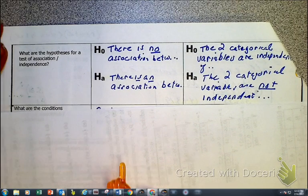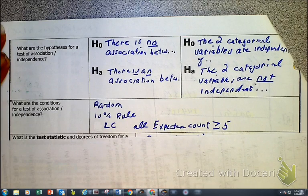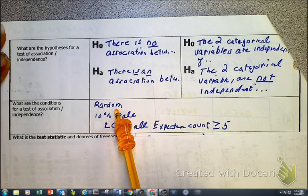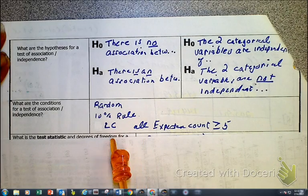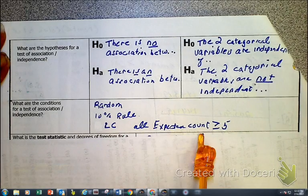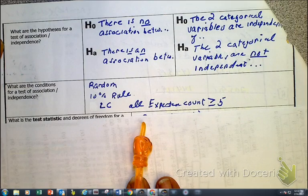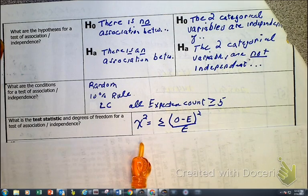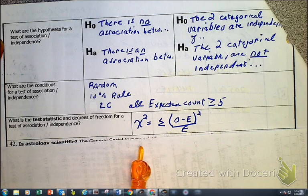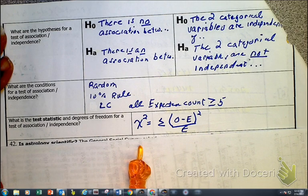Our conditions and assumptions. Well, it's the same thing. It is our randomness, our 10% rule if it's not an experiment, and our large count has to be greater than or equal to 5. What's the test statistic? Wait for it, wait for it. Oh, it's exactly the same. Remember, I said the mechanics were going to be the same.